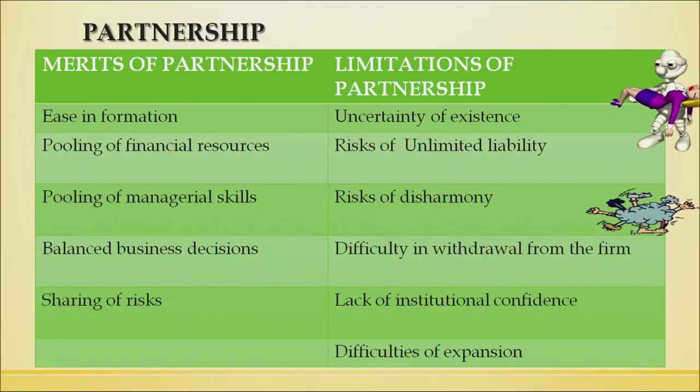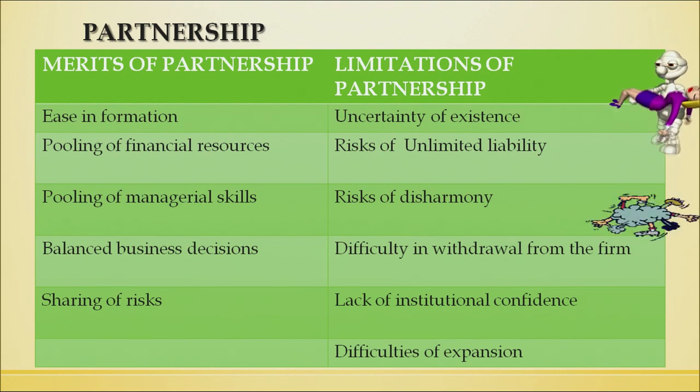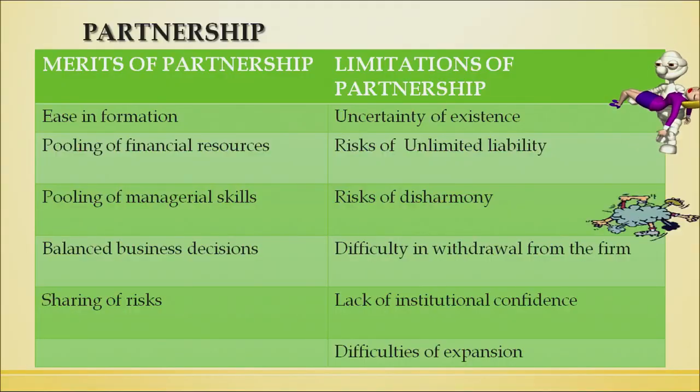Limitations of partnership: first, there is uncertainty of existence — even if one partner dies or becomes insolvent, the partnership firm gets dissolved. Risk of unlimited liability: if the business's existing liabilities exceed its assets and funds, the personal assets and property of the partners can be used to pay off those debts. Risk of disharmony: as many people are involved in management, there can be mismanagement or conflicts. If conflicts arise and partners do not consider each other in decision making, disharmony may occur and the effectiveness of the business gets hampered.